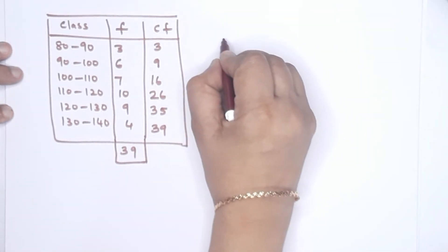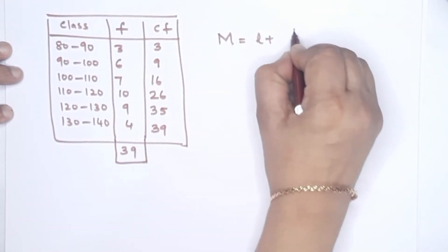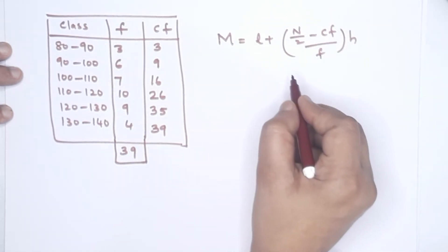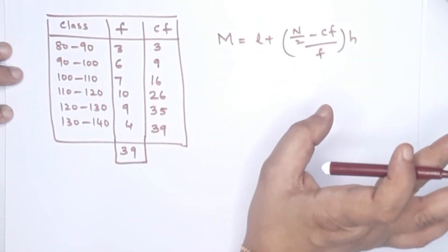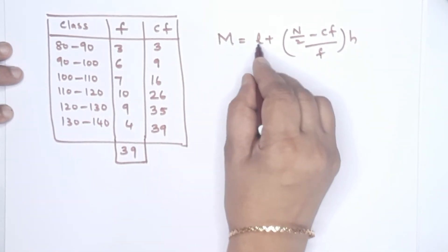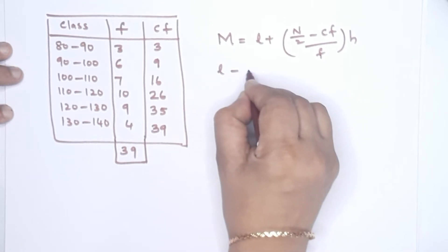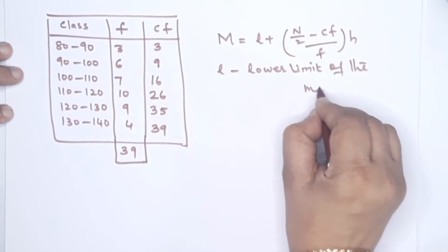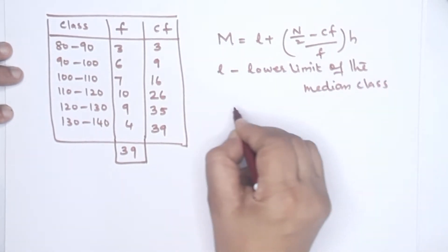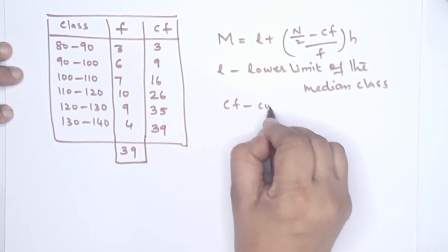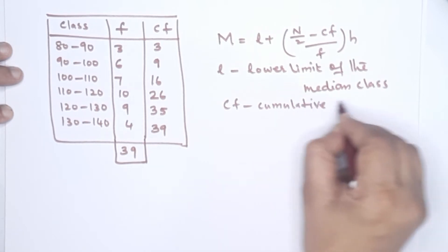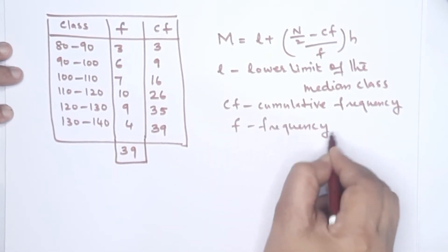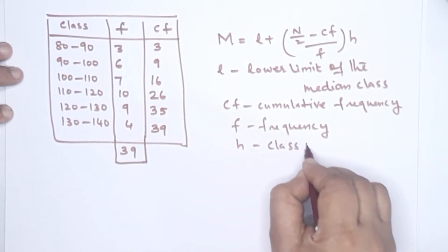Now I'm going to teach you the median formula. Median is equal to L plus N by 2 minus CF by F into H. This formula may not be in the textbook, but in every method it is the same thing. L is the lower limit — that is the lower limit of the median class. CF is the cumulative frequency. F is the frequency of the median class.